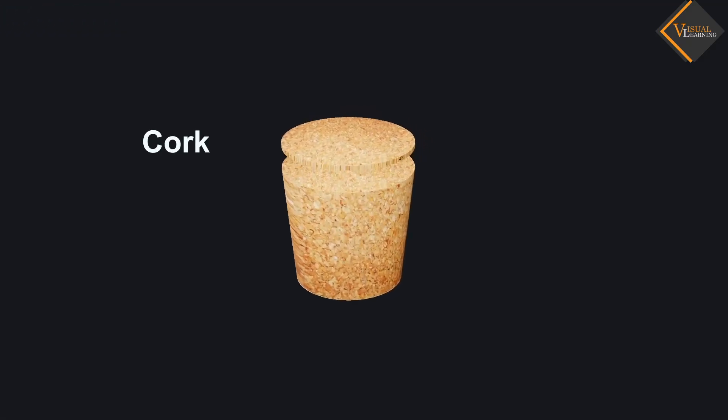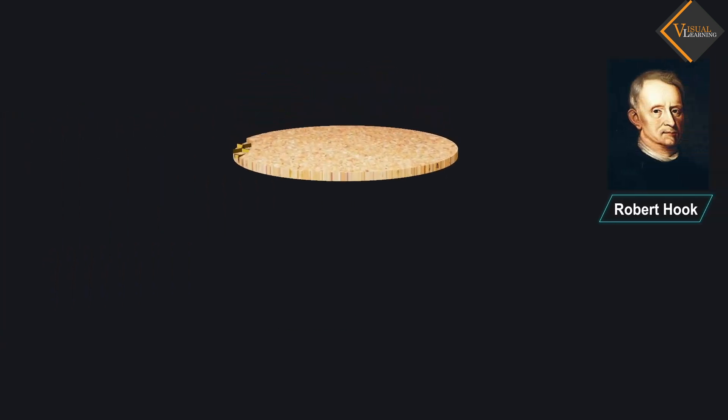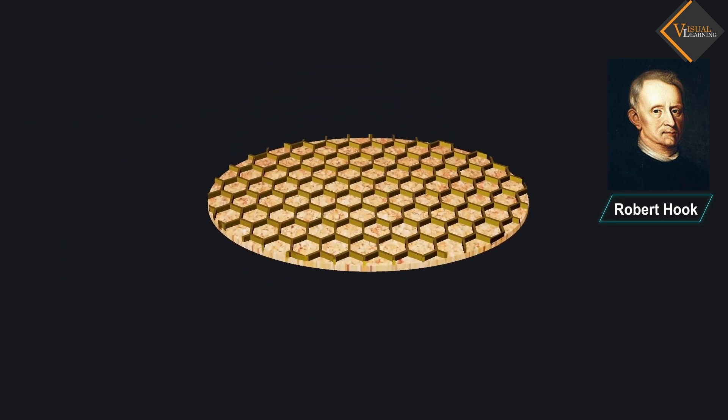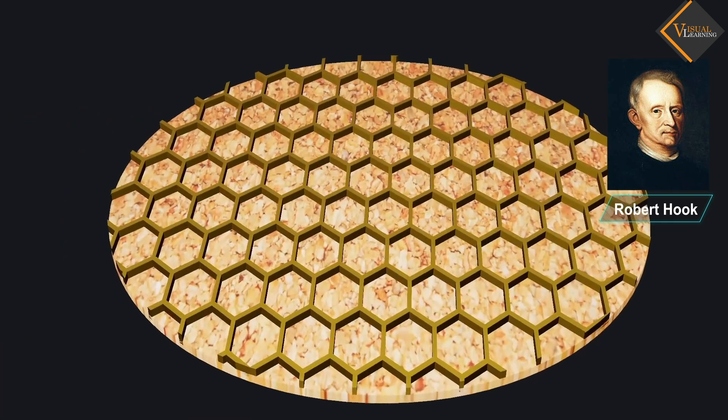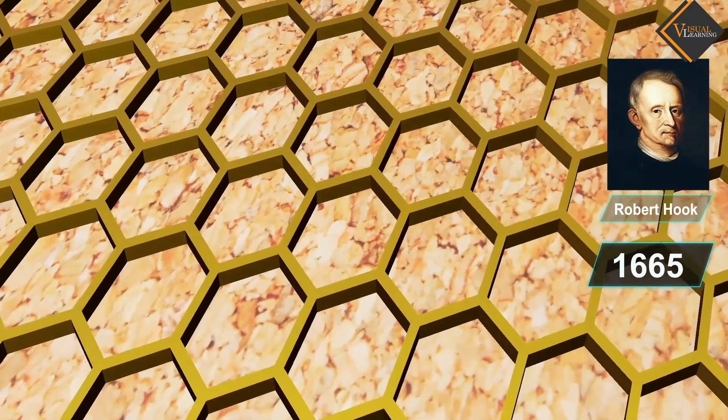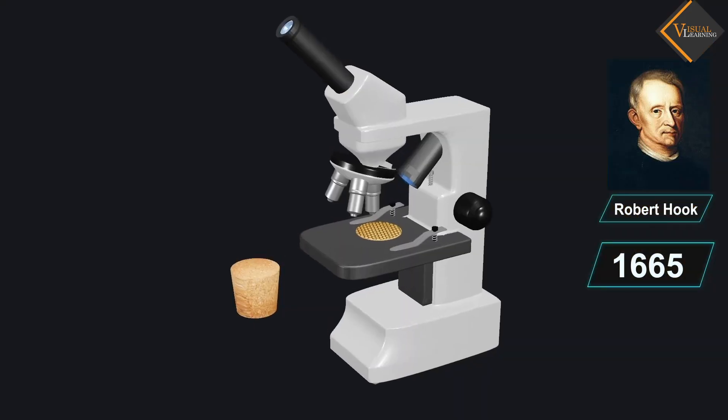While examining a thin slice of cork, Robert Hooke saw that the cork resembled the structure of a honeycomb consisting of many little compartments. This was in the year 1665 when Hooke made this chance observation through a self-designed microscope.